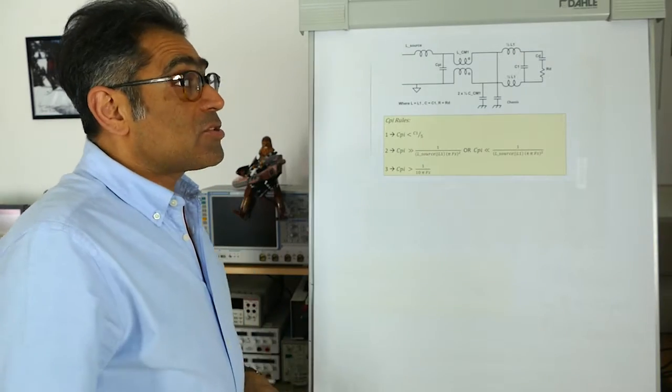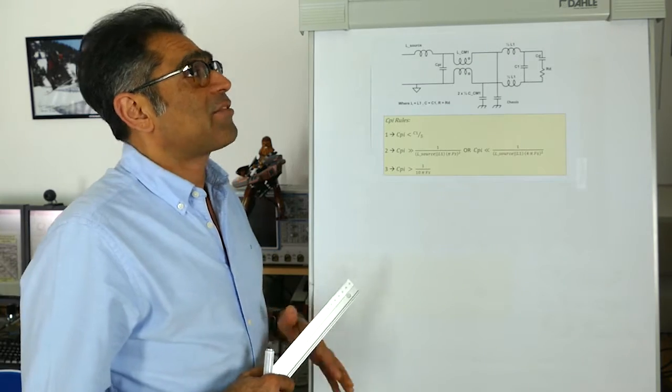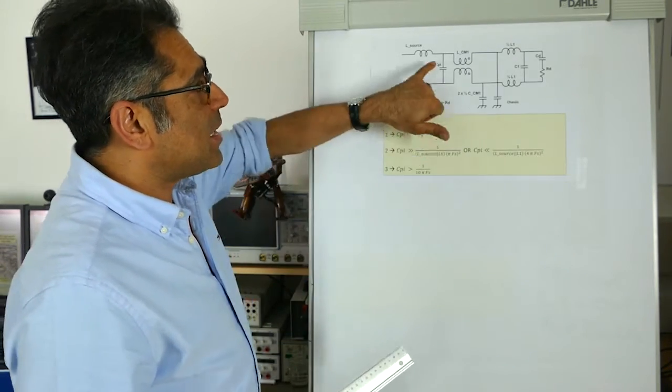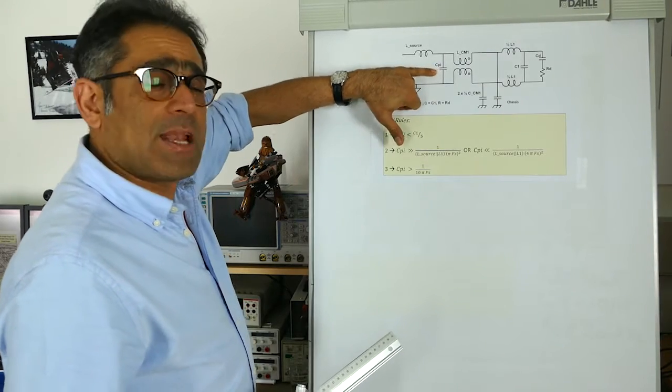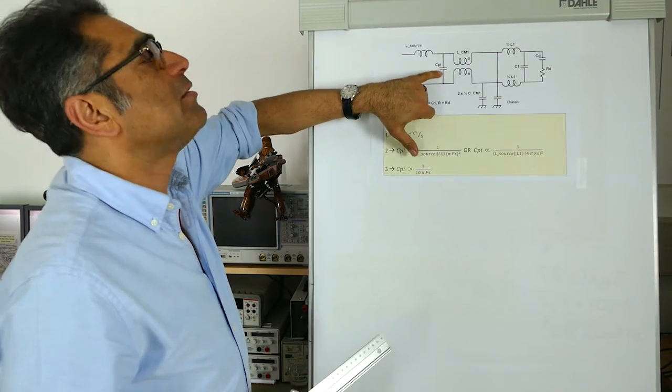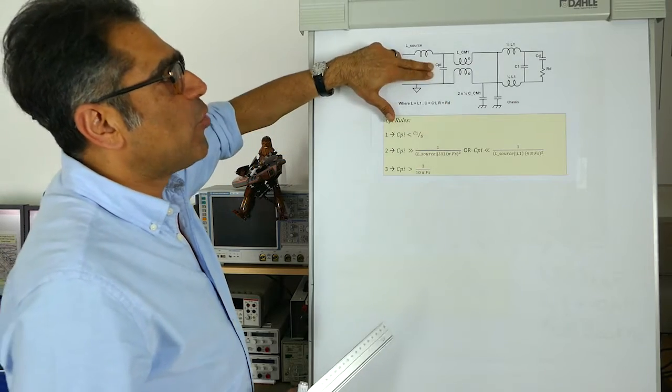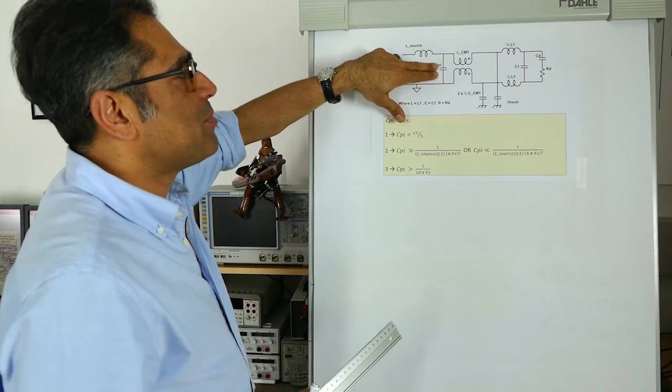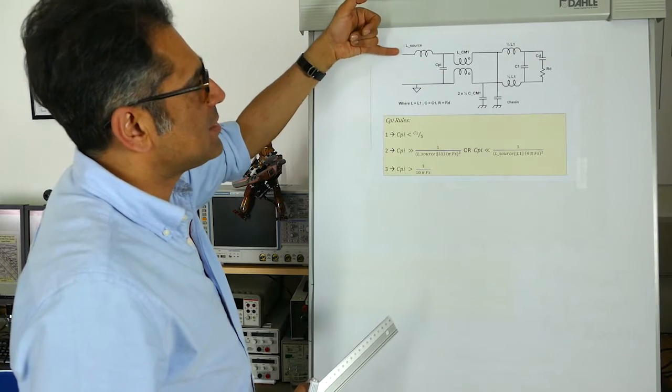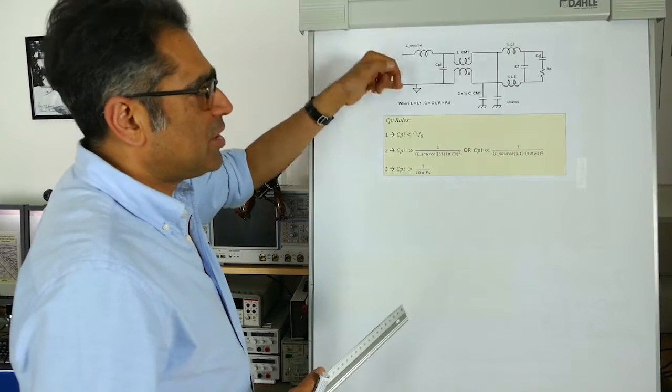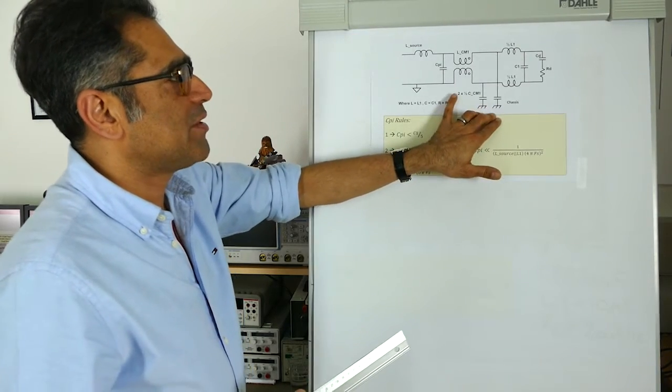Okay, so so far from the previous videos we have calculated pretty much all of the components, with the exception of this capacitor here that I'm going to call C pi, as in the capacitor that makes it look like a pi filter. This is actually for the differential mode currents, it doesn't have much impact on the common mode currents, and you can see it's sitting between your line and the neutral or line and the return, and of course the chassis or the protective earth is here.